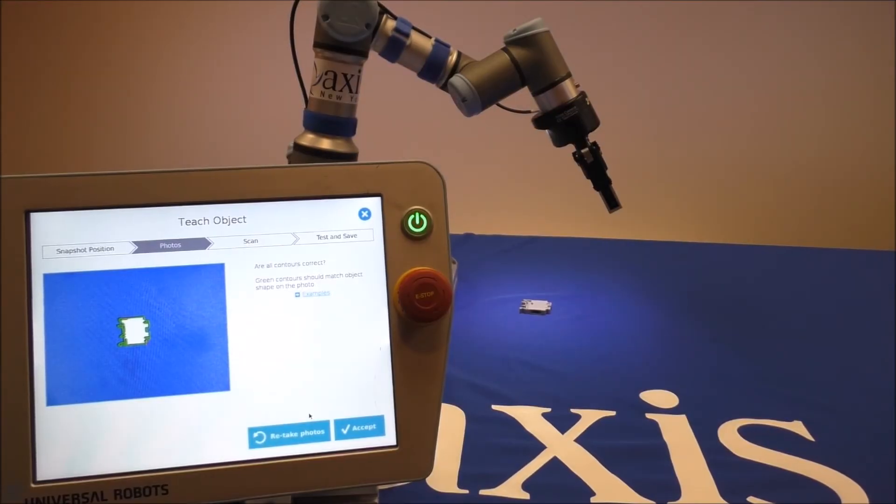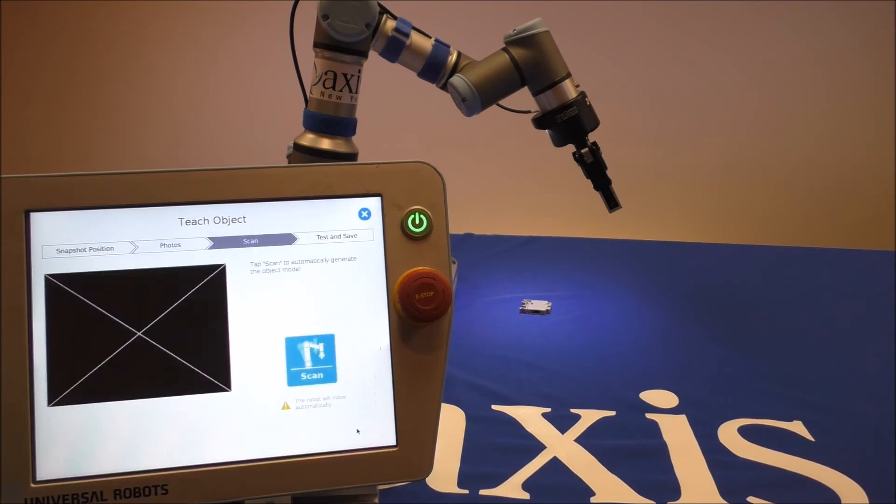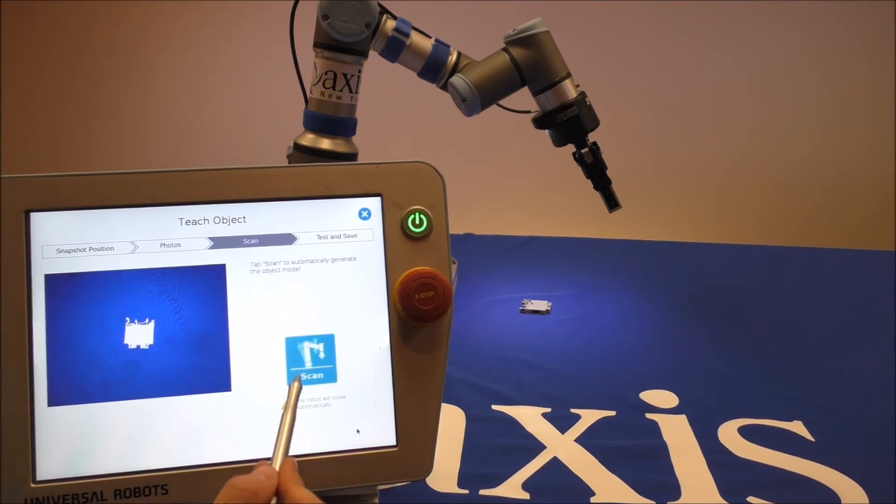Now that we've taken all four pictures, the wizard is going to ask us to confirm that the outline contours of the part match what we're looking for. Here we're going to press accept and we're going to scan the part to generate the object model. This will take a few minutes while the robot moves to nine different positions and takes nine images of the part.